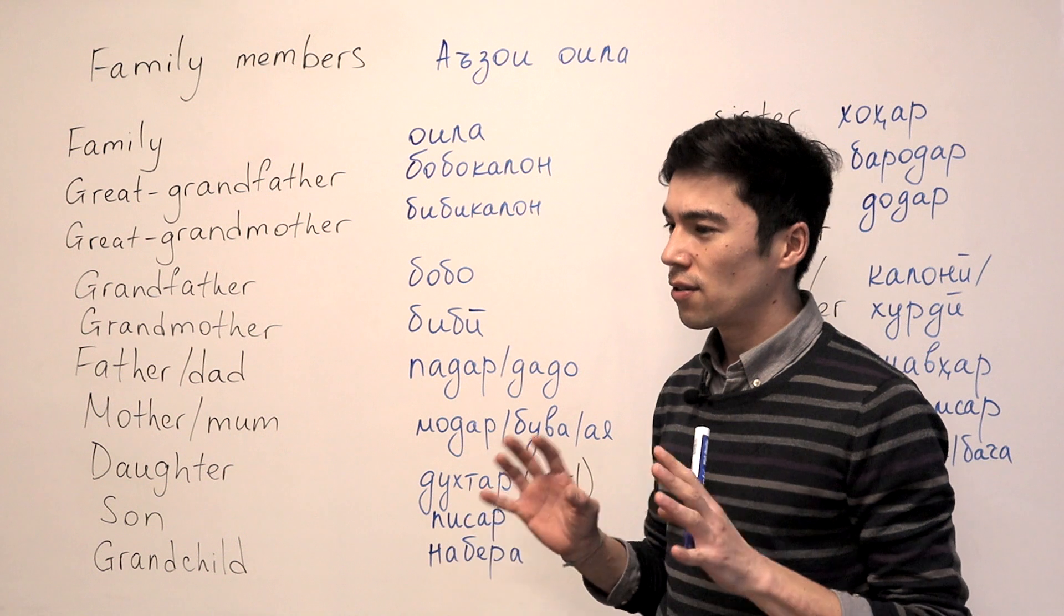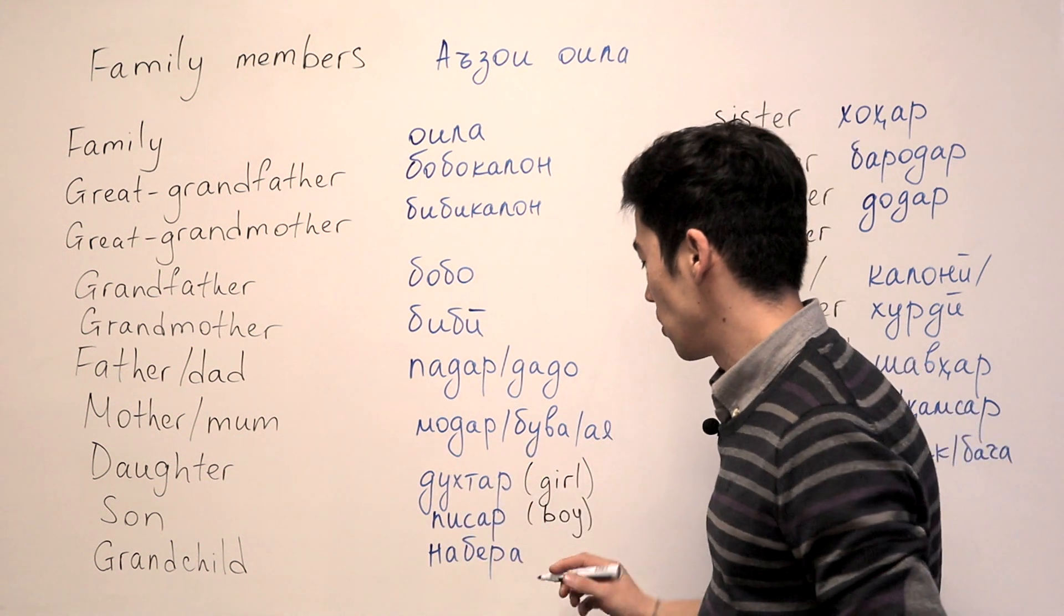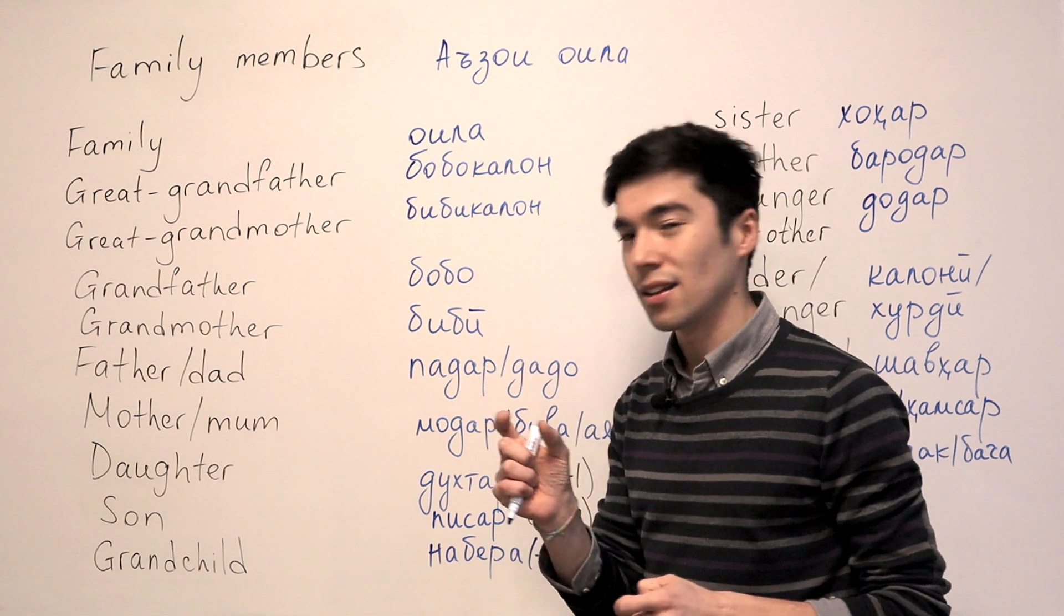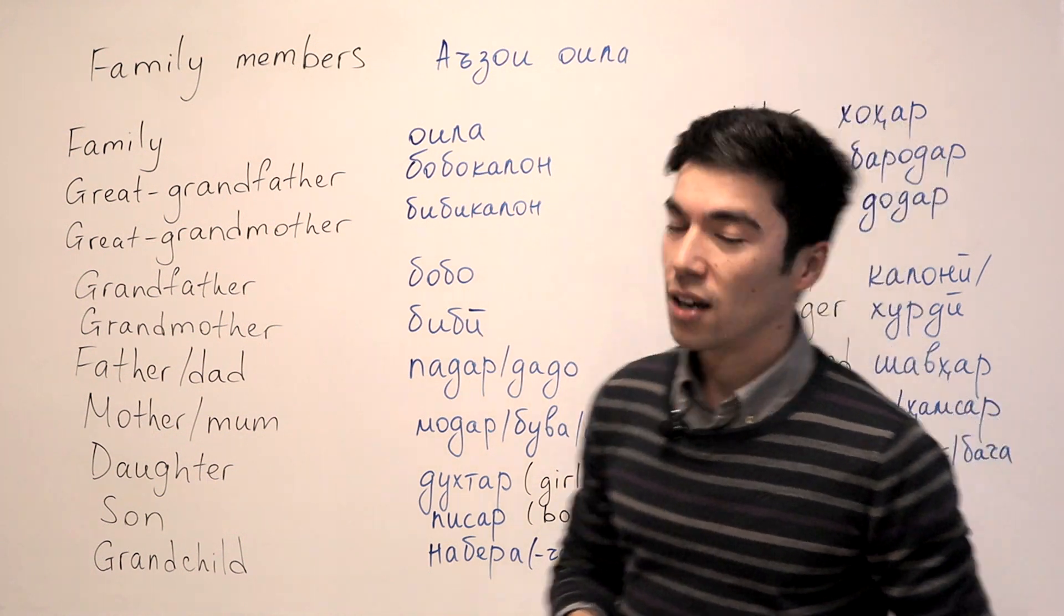If it's someone very, very young, let's say one or two years old, you can just say Nabirece. If we add Ce at the end, it means like small. Nabirece.